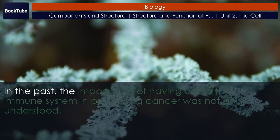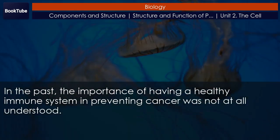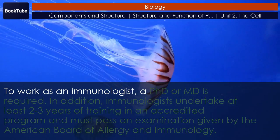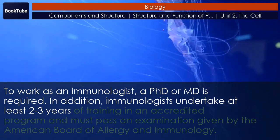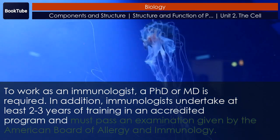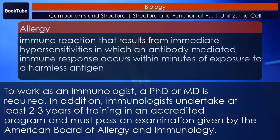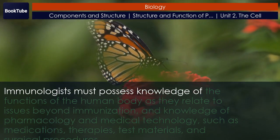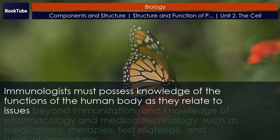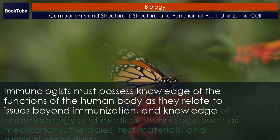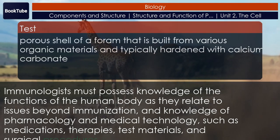Some immunologists work to understand natural immunity and the effects of a person's environment on it, while others study how the immune system affects diseases such as cancer. To work as an immunologist, a PhD or MD is required. Immunologists undertake at least two to three years of training in an accredited program and must pass an examination given by the American Board of Allergy and Immunology. They must possess knowledge of human body functions, pharmacology, and medical technology, such as medications, therapies, test materials, and surgical procedures.